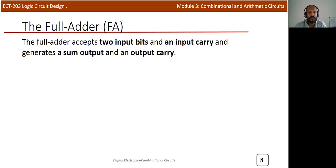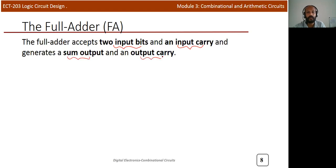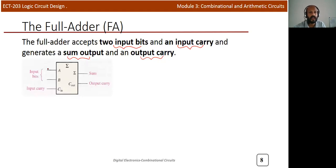Now we move to the full adder. In the previous case we added two bits at a time, but in a full adder we add three bits at a time. A full adder accepts two input bits and an input carry — three input bits total — and generates two output bits: one sum and one output carry. Let's look at the block diagram of the full adder.